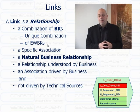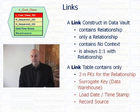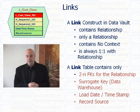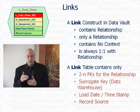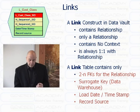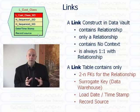So it's unique, specific relationships. They should be natural business relationships — relationships that are understood by the business, just like the hub keys were — and they're not technically driven. We're not trying to build links that are based on just technical or source system views. A link construct is only a relationship, just like the hub contains no context. It has a surrogate key, and the link table contains two or more foreign keys for the relationships based on the surrogates, date-time stamp, and record source — almost identical to the hub, but instead of a business key, it's a relationship of keys.